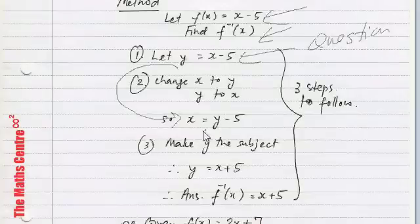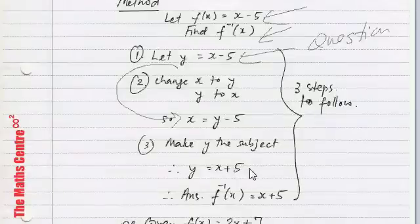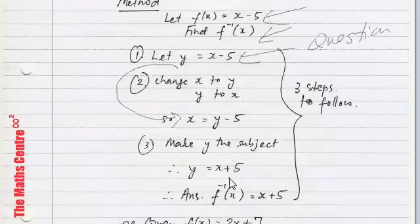So, the third step is to make now y the subject. So, y the subject means only y on the left hand side. So y becomes, bring this 5 across, you have y equals to x plus 5. And finally, just write down the answer. f inverse x equals to what you just obtained, x plus 5.